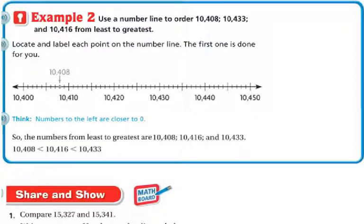So another way to do this is like example two. You can use a number line to order 10,408 and 10,433 and 10,416 from least to greatest. So first we're going to locate and label each point on the number line. The first one is done for you. So we have 10,408. So right there's my point. So this one is done.